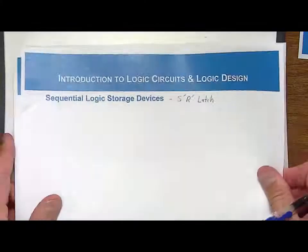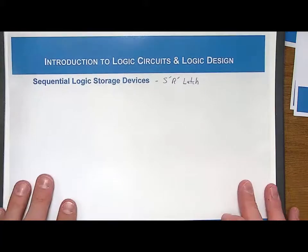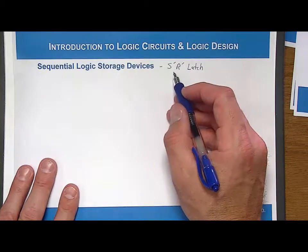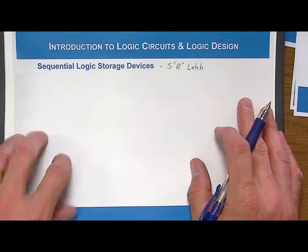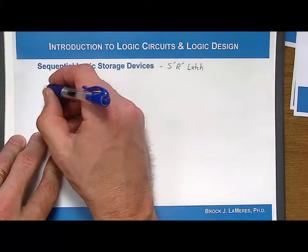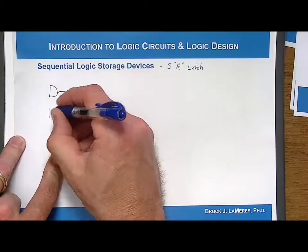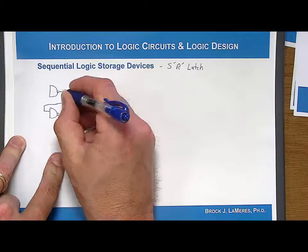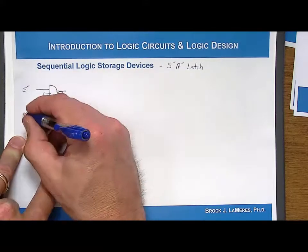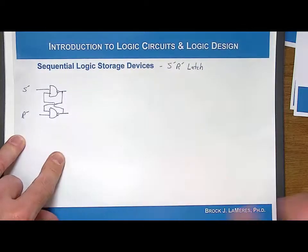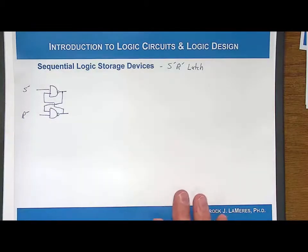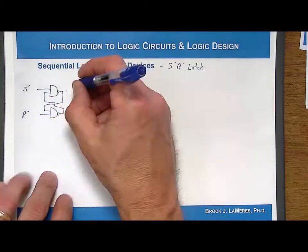The S̄R̄ latch is an interim step. It has some uses by itself when it comes to debouncing switches, but it is a stepping stone to ultimately get to the D flip-flop. We are going to modify the SR latch so that it operates with complemented inputs. We'll replace the NOR gates with NAND gates, still with a cross-coupled feedback loop, and this time we call the inputs S̄ and R̄ — the bar meaning complemented. The outputs are Q and QN.